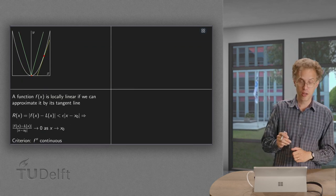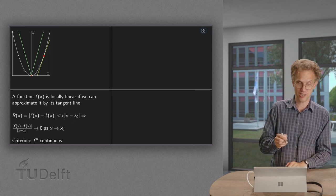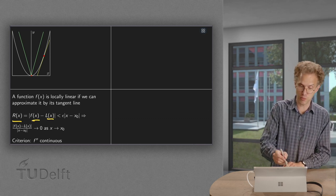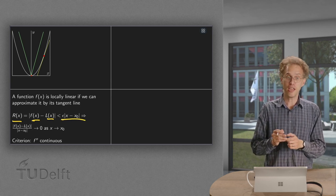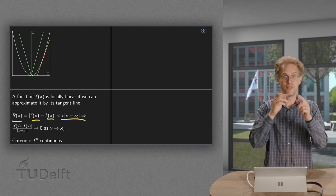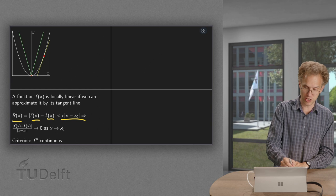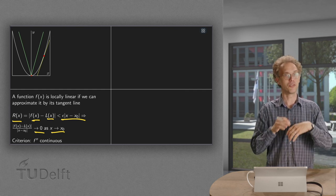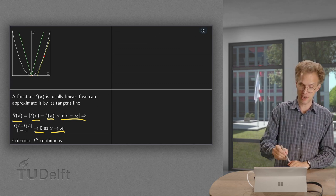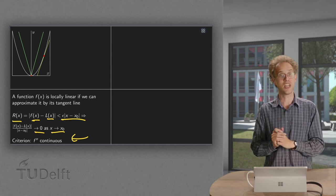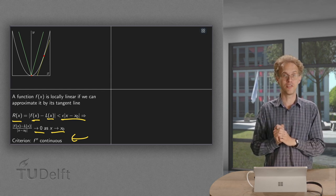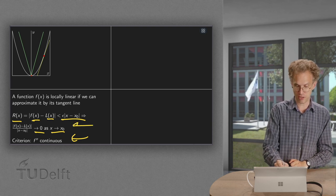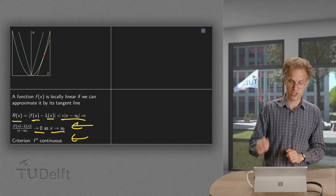So what's the definition? A function is locally linear if you can approximate it by its tangent line. So the remainder r(x) — which is the function minus its tangent line — should be small, even smaller than something linear. So even if you divide by x minus x0, this f(x) minus L(x) divided by x minus x0 should go to 0 as x approaches x0. Fortunately, we have a nice criterion: a function is locally linear if its second derivative is continuous. Because if the second derivative is continuous, you can use Taylor's theorem for the remainder and prove that you automatically satisfy this criterion.